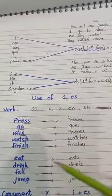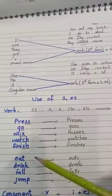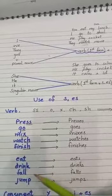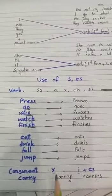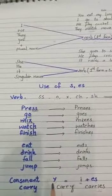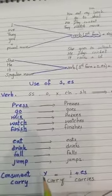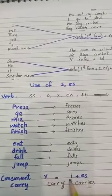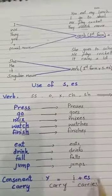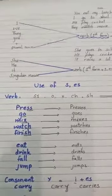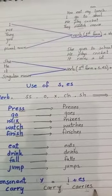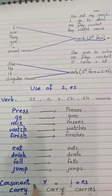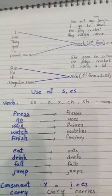With other verbs like eat, drink, fall, jump, when we use them, we will just add 's'. And one more thing: if any verb ends with 'y' and before 'y' there is a consonant, we will cut that 'y' and add 'ies'. Like 'carry' - we cut 'y' and add 'ies' to make 'carries'.